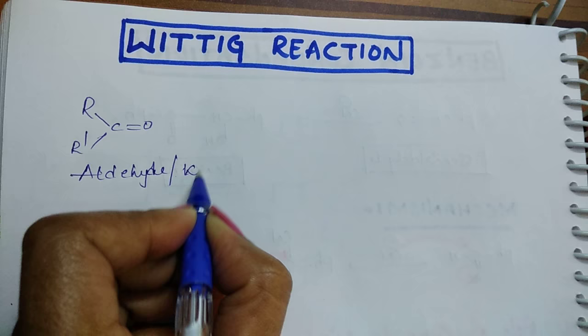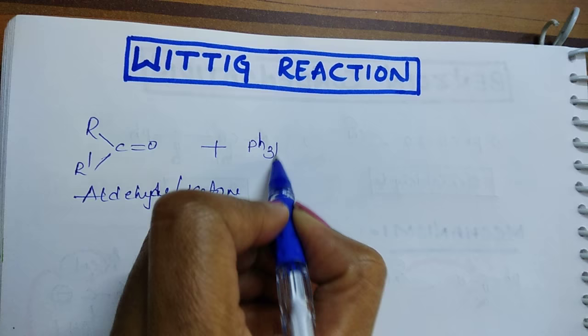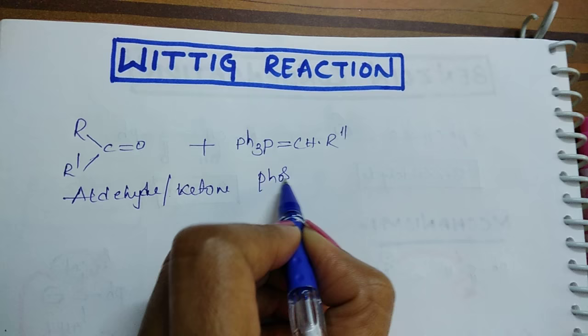...react with Wittig reagent, that is phosphorus ylide. To differentiate from this, I am writing R double bond. This is called phosphorus ylide.